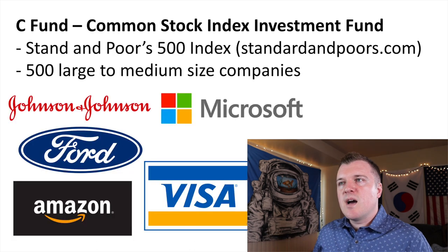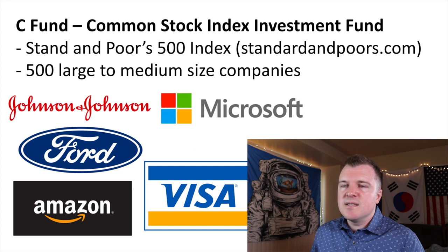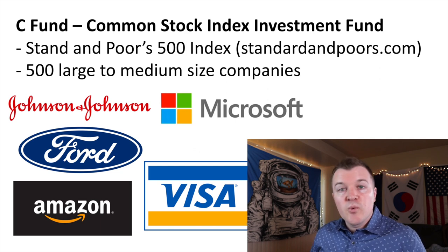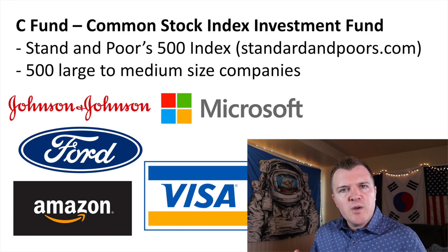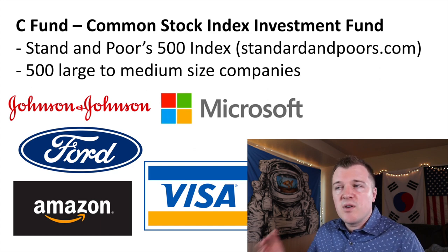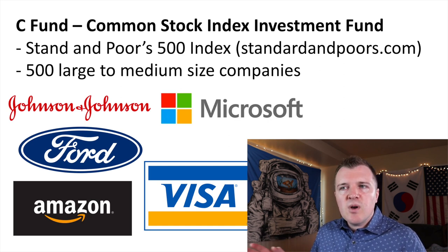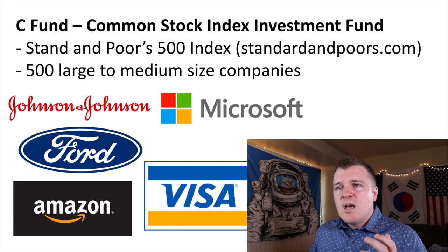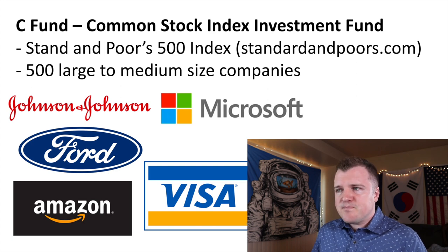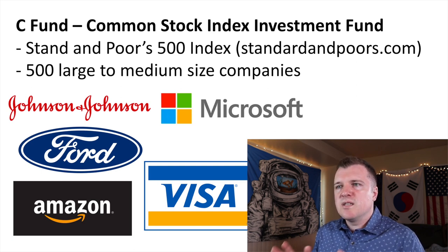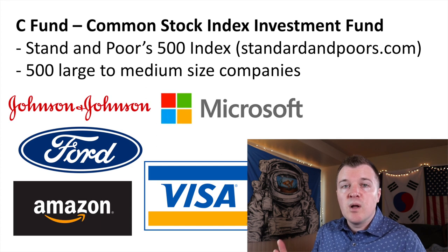The C fund is the Common Stock Index Investment Fund, and this is Standard & Poor's 500 largest companies in America. Frequently on the news, you might hear this called the S&P 500 — these are America's 500 large to medium sized companies. These are all the companies you know by name: Amazon, Ford, Apple, Johnson & Johnson, GE, Microsoft, Visa. When you're investing in the C fund, you're investing in well known companies.